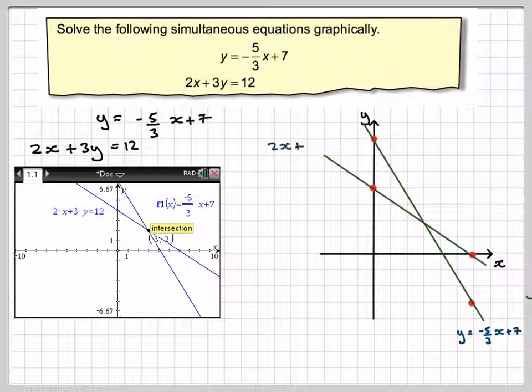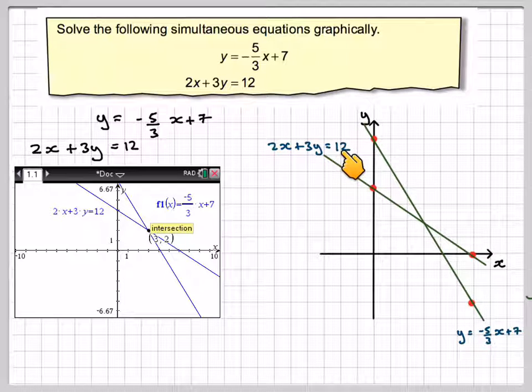Mark on the second one. Label it 2x plus 3y is equal to 12.